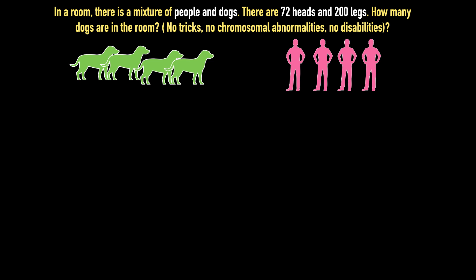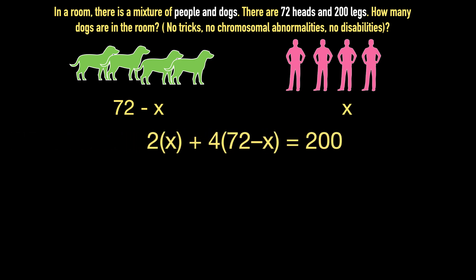According to the question, there are a total of 72 dogs and people, and a total of 200 legs. Let x be the number of humans with 2 legs, and let 72 minus x equal the number of dogs with 4 legs. Since there are 72 heads and 200 legs, we can write the equation as: 2 times x plus 4 times (72 minus x) equals 200.